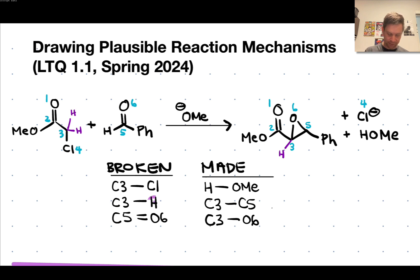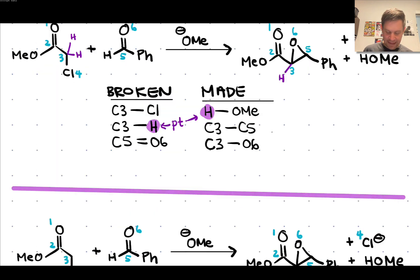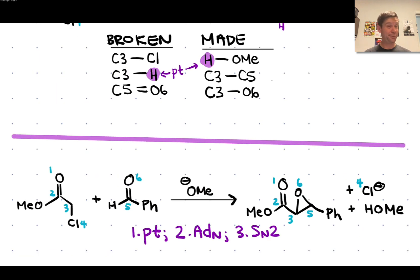It's also worth noticing that one bond to H is broken and one bond to H is made, and this suggests that proton transfer is going to be involved in the mechanism, specifically the transfer of a proton from C3 to methoxide to create methanol and the conjugate base. In the actual problem, the elementary steps were given and the first step was proton transfer, so just by listing the bonds made and broken, we've identified the most likely proton transfer.